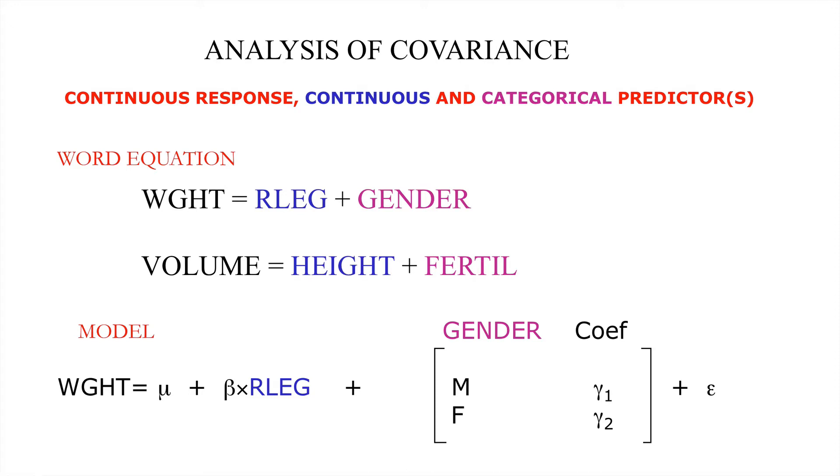Here are the equations representing a simple analysis of covariance. It's a simple equation. Here we have the continuous response. There's the continuous predictor. And here are the levels of the categorical predictor, with the inevitable epsilon, the error. The part of the variability of the data that the model cannot explain.